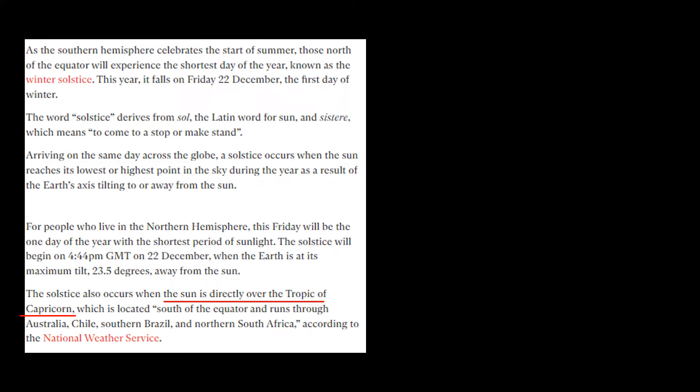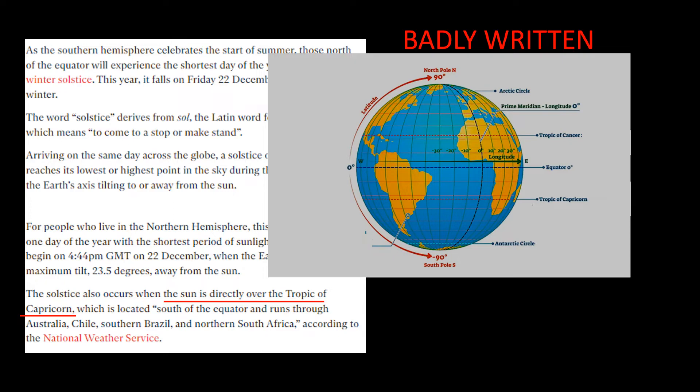The article says the solstice also occurs when the sun is directly over the Tropic of Capricorn. This is badly written. The Tropic of Capricorn is a line of latitude running 23.44 degrees south, and clearly the sun can't be overhead everywhere on a line of latitude at the same time. At some places located on the Tropic of Capricorn, it was actually dark at 3:47 a.m. UT when the solstice occurs.